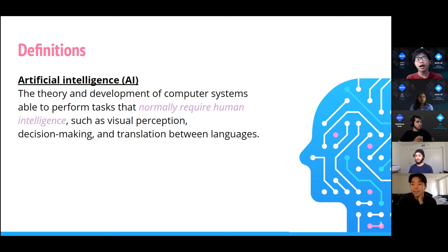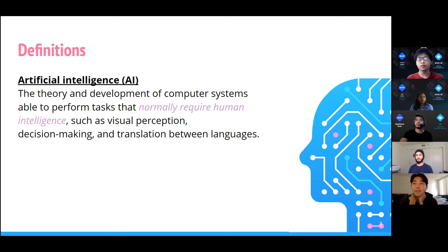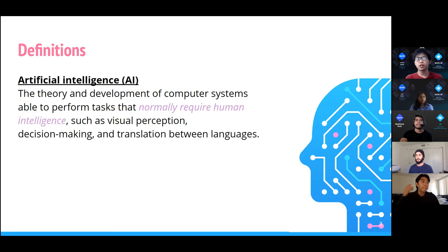We want to highlight the phrase 'normally requires human intelligence,' because as AI tools develop and become more sophisticated, we actually stop thinking of things as AI because it just becomes normal. But this is still a useful definition, because things like visual perception, decision making, and language translation are examples of what we currently consider artificial intelligence.